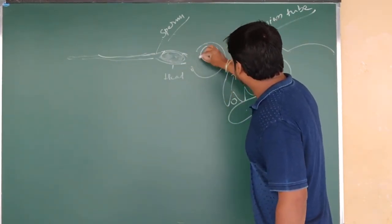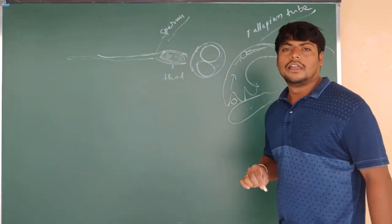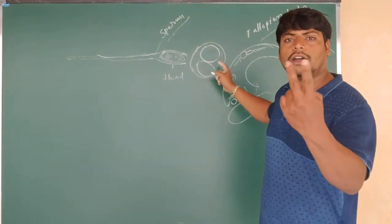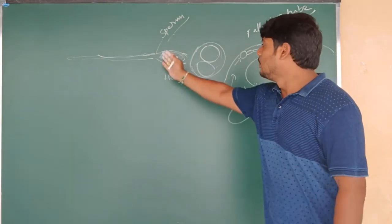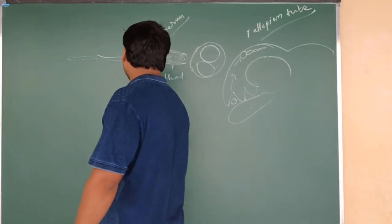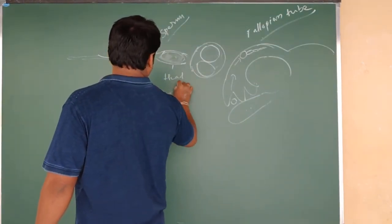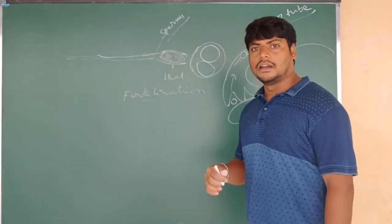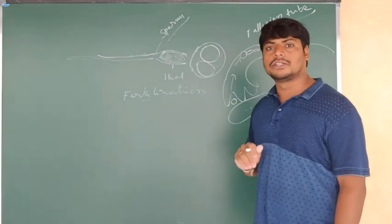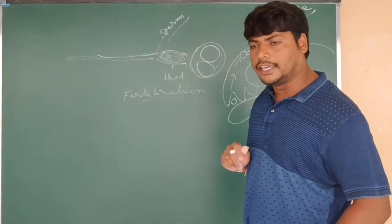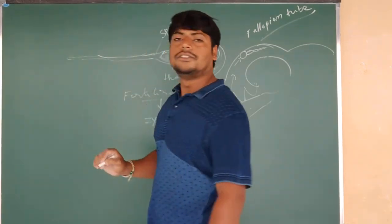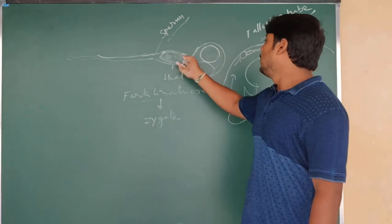The egg cell consists of one nucleus, and the sperm cell deposits another nucleus into it. So now a single cell consists of two nuclei. The male gamete and female gamete fuse together, and this process is called fertilization. After fertilization, a zygote is formed.